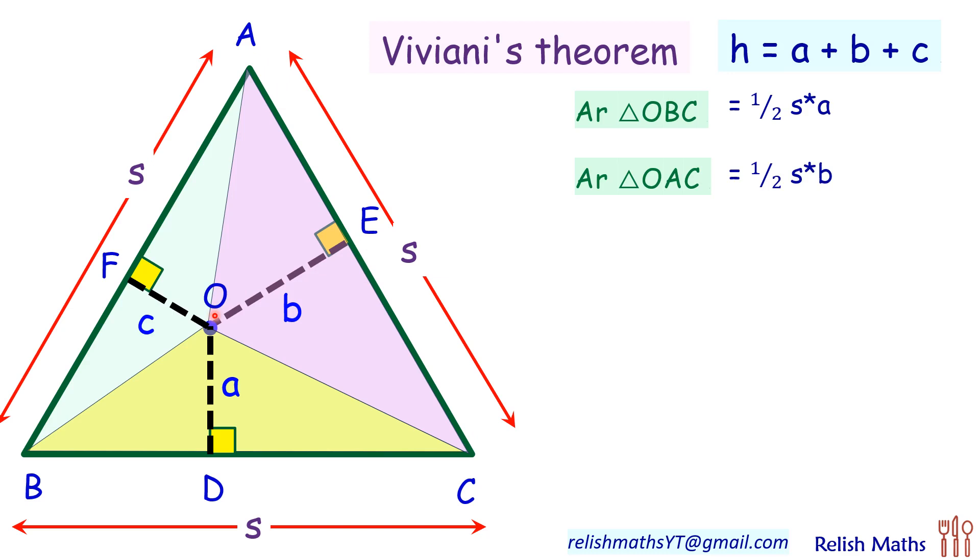And the same way for triangle OAB, this blue triangle, the area will be ½ × s × c. And what if we are interested in the full triangle ABC? For that, let's drop a perpendicular from A. So we'll say that the area of triangle ABC is half of base, which is s, into height, which is h.